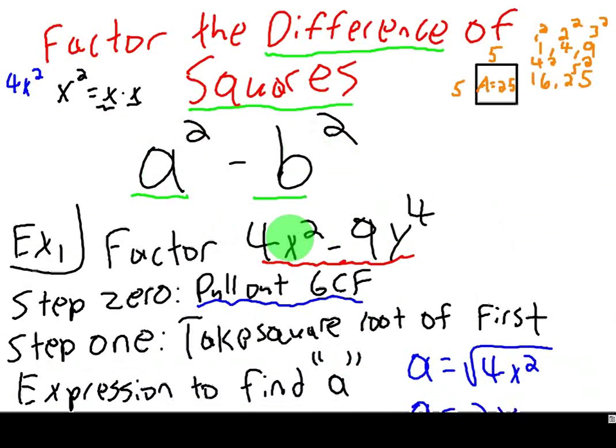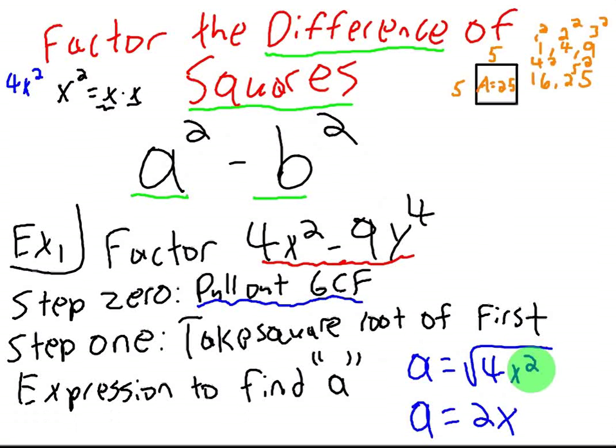That will give you your A. This is very straightforward. Basically, you're figuring out A and B, and you're going to plug it into a formula. You're going to plug it into this formula, actually, and it'll pretty much factor it for you. So my first term is 4x squared. I'm going to take the square root of that.